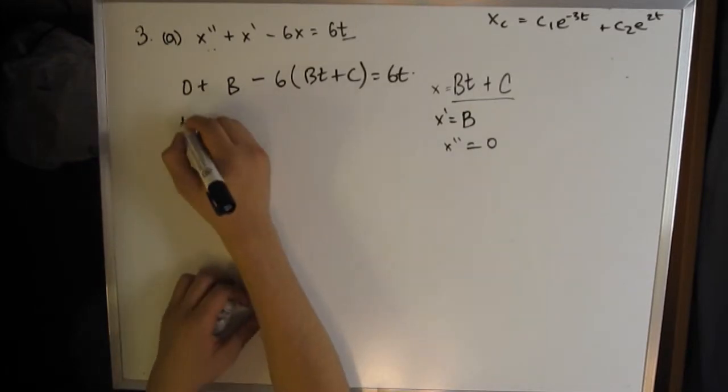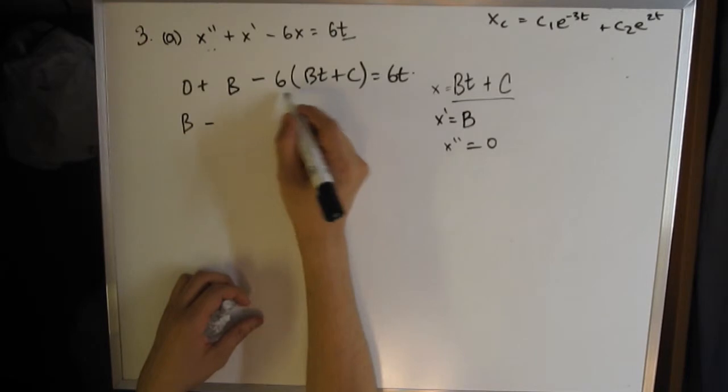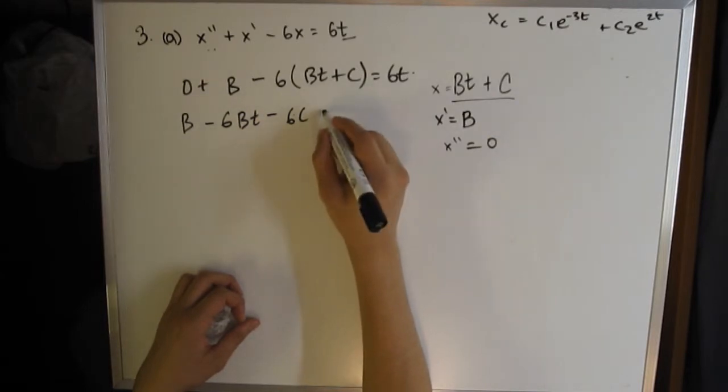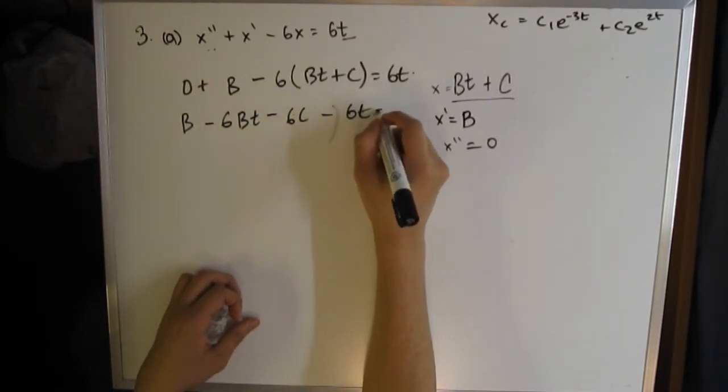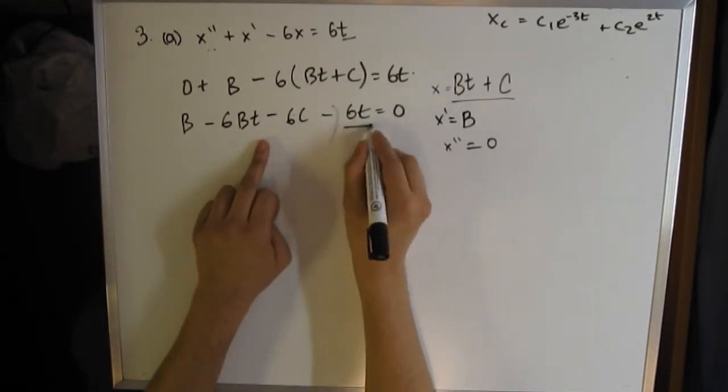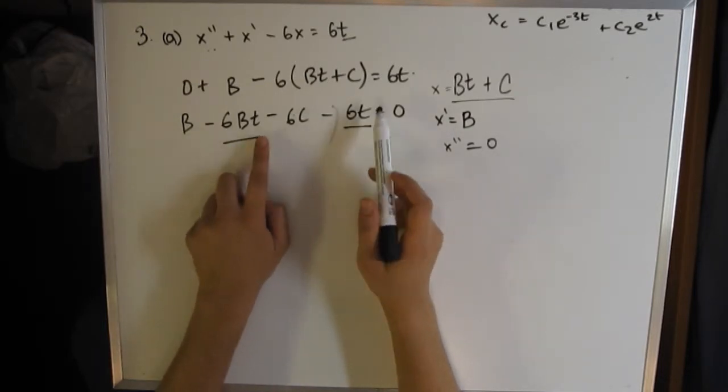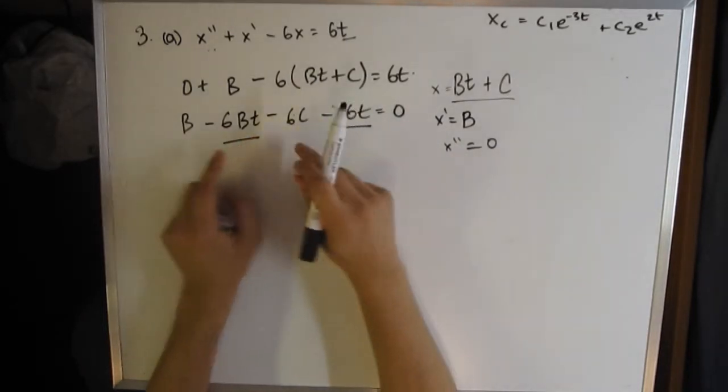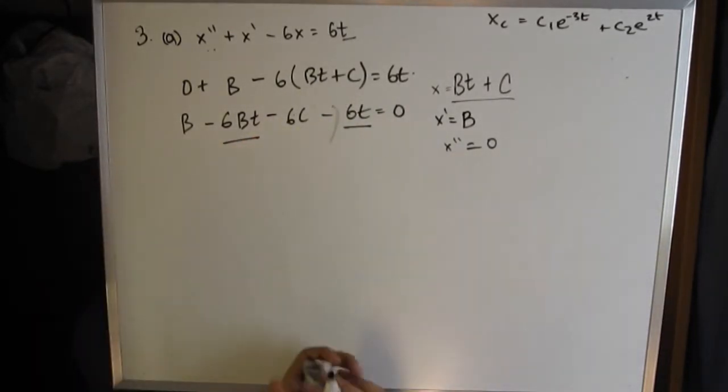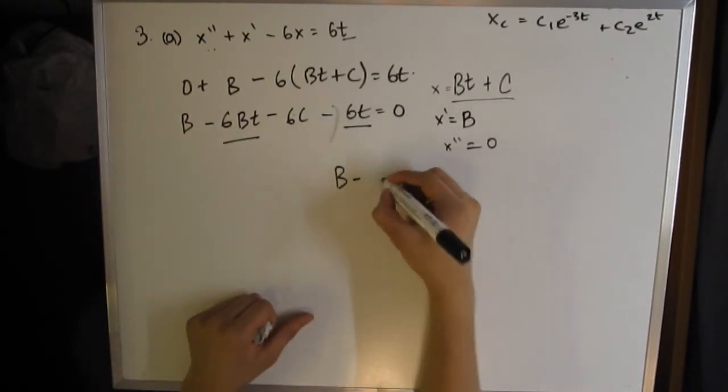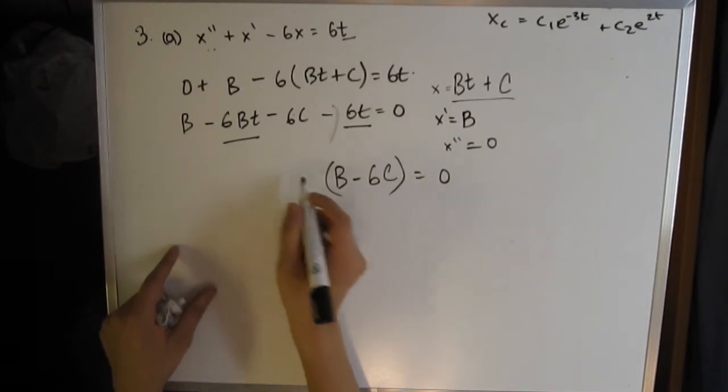We get 0 + b - 6(bt + c) = 6t. Now we rearrange so we can group everything by the power of t. All the constants grouped together and all the multiples of t grouped together. Get everything to the left-hand side: b - 6bt - 6c - 6t = 0. There are two elements with t to the power of 1, and two with t to the power of 0.